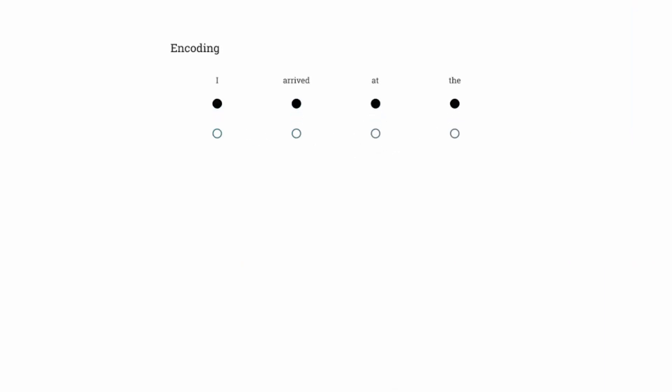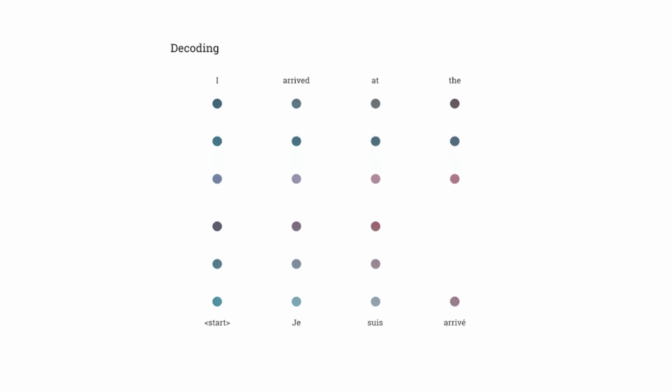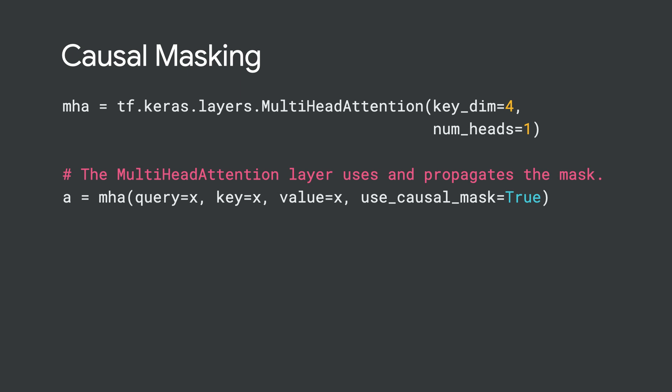If you're building transformer models, we've made some improvements to the attention APIs that should make your life a little easier. When building an autoregressive model, you need to hide future training data so that your model only sees the outputs generated before the current time step. Otherwise, it can learn from future data that won't be available at inference time. Using a mask, this is called causal masking and is now automatic in Keras. By enabling useCausalMask when calling the attention layers, Keras will add a mask that ensures that each location cannot attend to locations in the future.